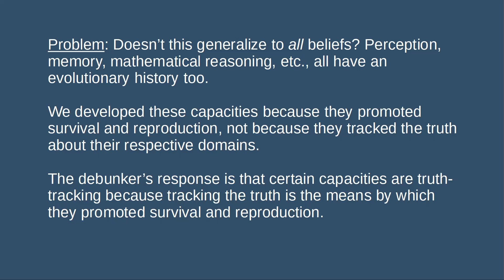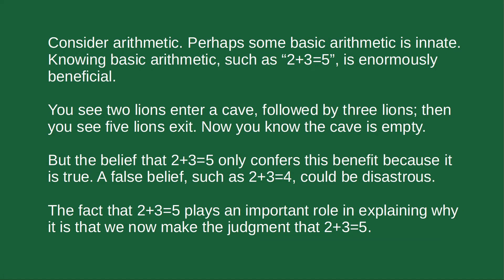What the evolutionary debunker will say is that there are certain cognitive traits or cognitive capacities that function to track the truth, because tracking the truth in particular domains promotes survival and reproduction. For some capacities that produce representational states, success at truth-tracking explains why those capacities arose and persisted.